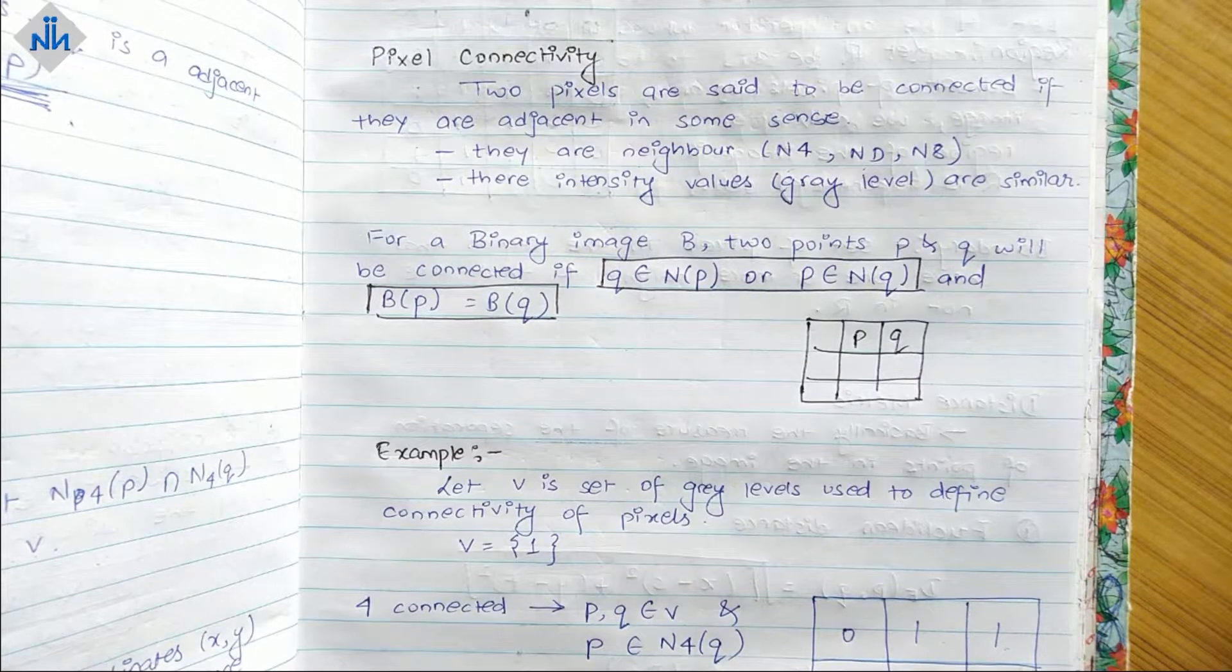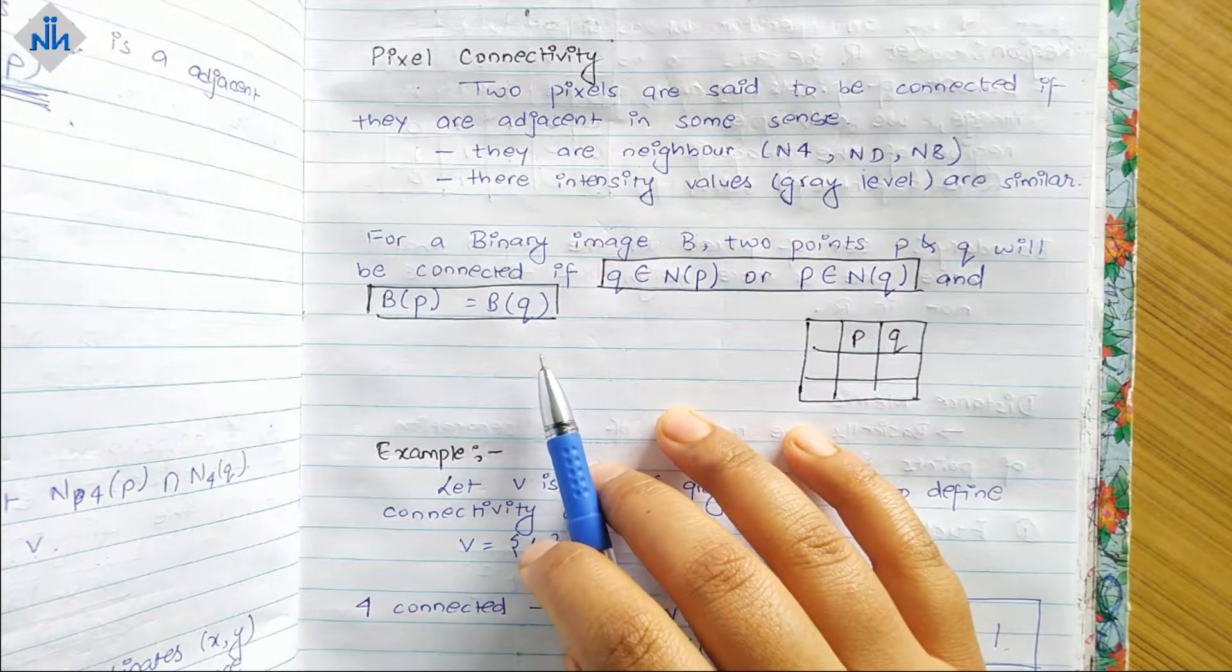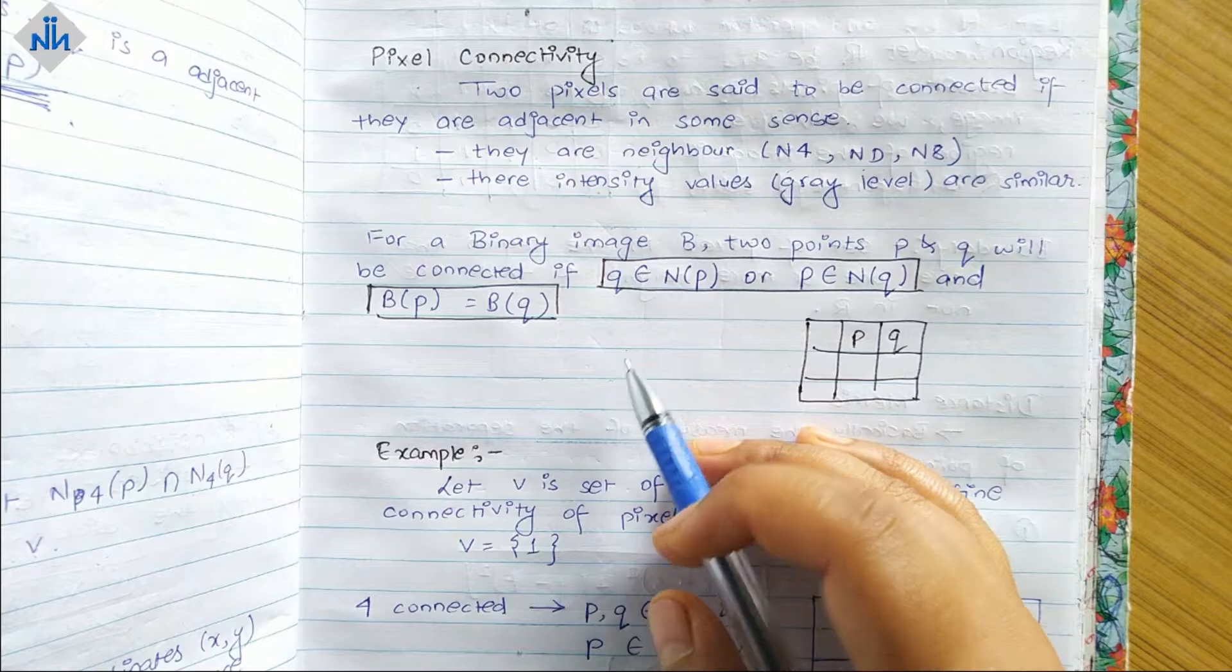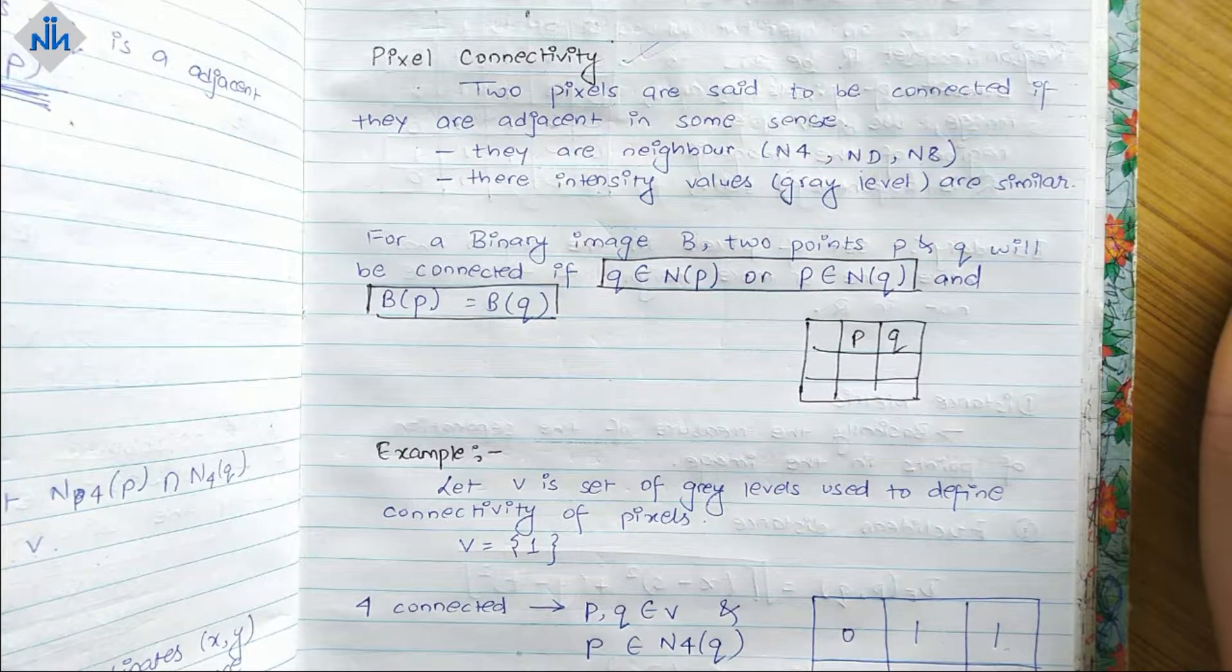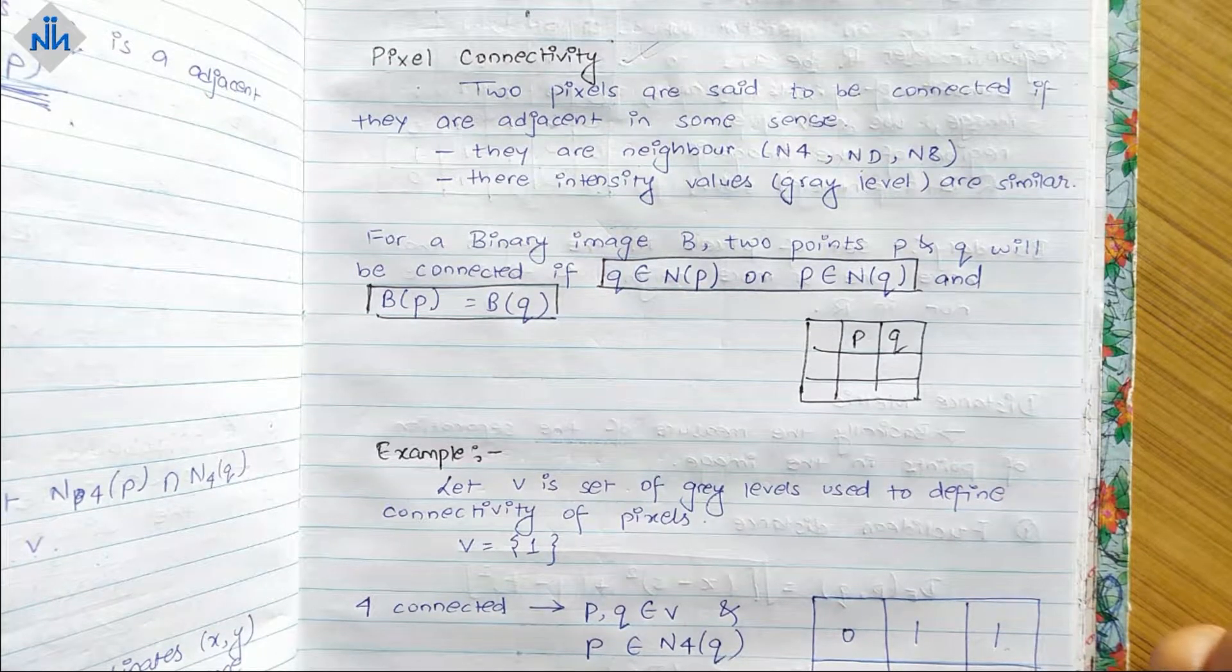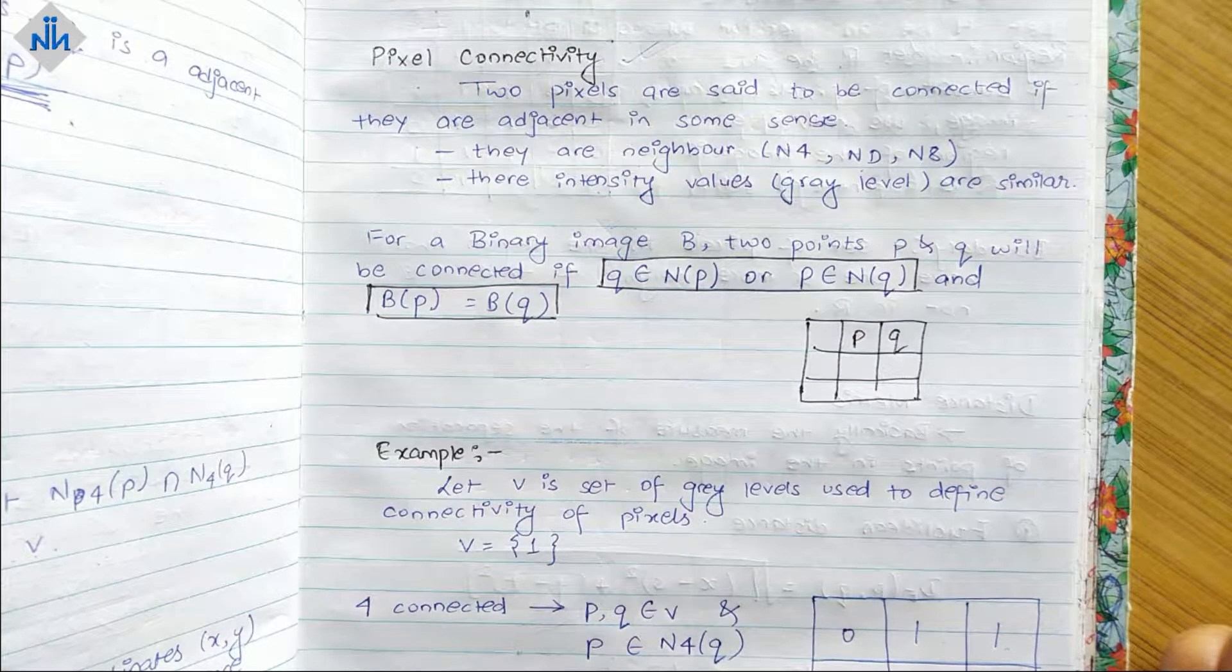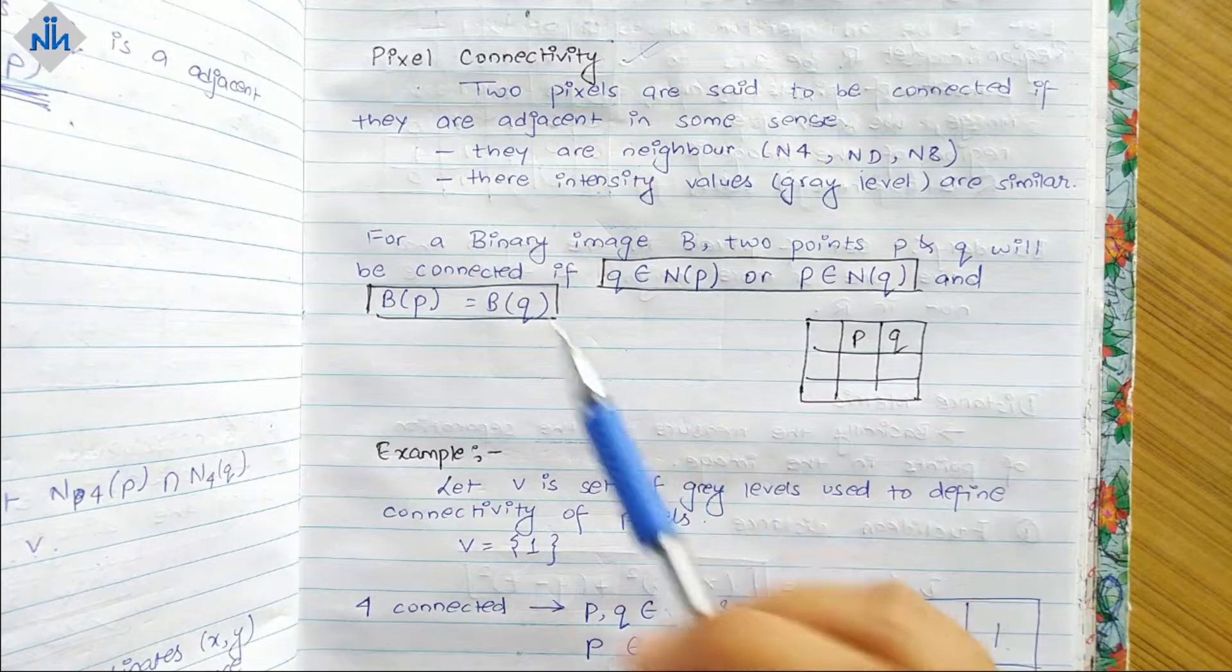Hello everyone and welcome back to Nodes Naka. In this video we are going to talk about pixel connectivity. This is a quite important topic and it might hold some marks in our semester exams. Besides that, it is a very important topic because our further concepts will be based on this. So what is pixel connectivity? Two pixels are said to be connected if they are adjacent in some sense.